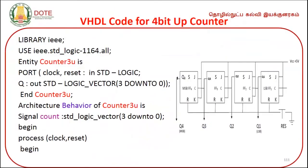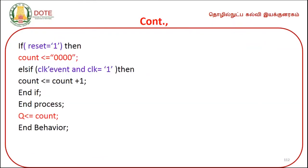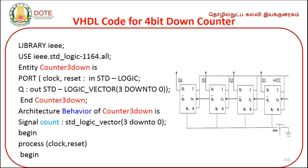In the previous module, we already covered how to write VHDL code for D flip-flop, T flip-flop, JK flip-flop, and NAND latch. Then, we saw how to write the program for a 4-bit up counter, and similarly how to write VHDL code for a 4-bit down counter.